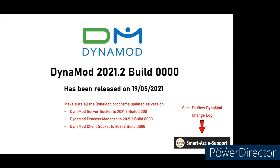This new version was already released last month on the 19th of May. This time there's no prerequisite program to install like the last version, which required .NET Framework 4.6. However, when you upgrade to the new DynamoD version, you also have to upgrade the server socket process manager and the client socket.